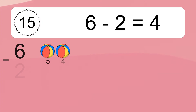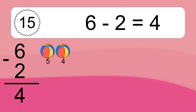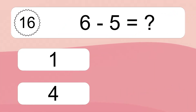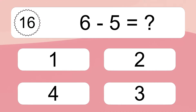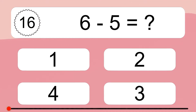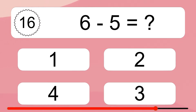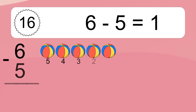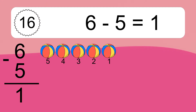6 minus 2 equals 4. Let's count it. 5, 4. 6 minus 5 equals what? 6 minus 5 equals 1. Let's count it. 5, 4, 3, 2, 1.